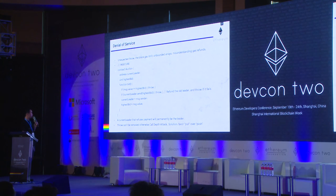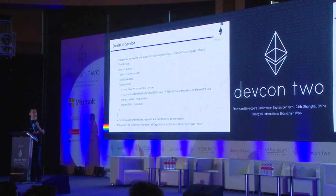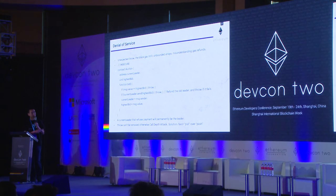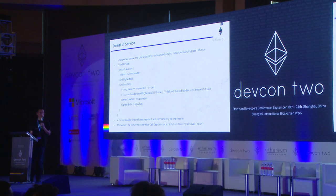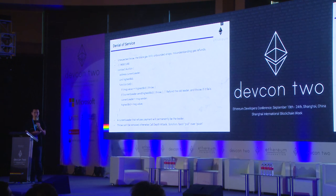Quickly, on denial of service against a contract: there are many pitfalls you can encounter. One is an unexpected throw, which is what this code example is about. Hitting the block gas limit is another example, as is iterating through an unbounded array, and misunderstanding gas refunds. In this example contract, the line with the throw means that a current leader who refuses payment will permanently be the leader. The throw cannot be removed because otherwise someone can do a call depth attack against bid, getting to be the current leader without having paid the previous leader.